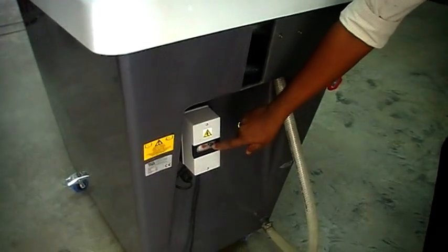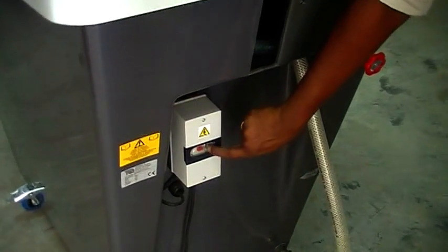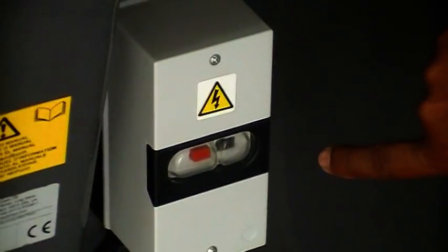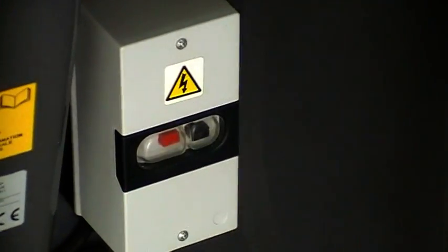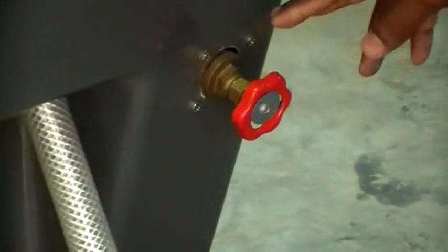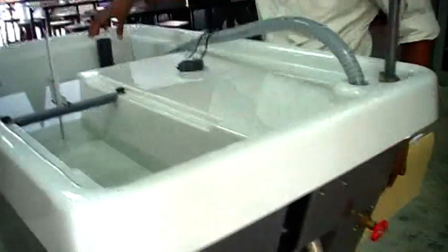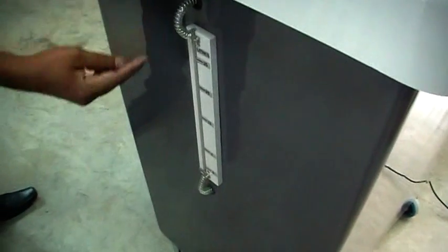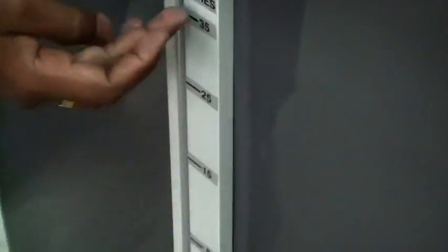On this side you can see the turn on switch of the pump. You can see it is turned on now. Then this is the emergency stop button. This is the inflow control valve. And this side you can see the drain valve. You have to lift it to drain the water. On this side you can see the calibrated scale from 0 to 35 liters.